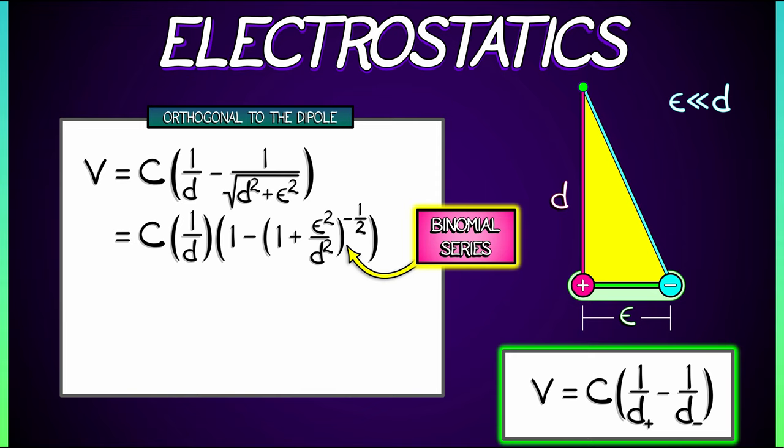Applying the binomial series, we get for V, C times quantity one over D times quantity one minus what? Well, let's see. The first term in the binomial is one. And then I've got a minus one half times the guy, which is epsilon squared over D squared. And then I've got, I don't remember the other terms, but they're all higher order terms. And we're just going to pay attention to the leading order term.